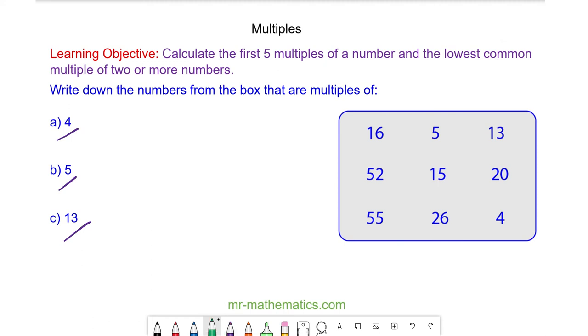Okay for question A. If 52 is divisible by 4, it is a multiple of 4. 4s into 5 go once with 1 left over, and 4s into 12 go 3. So 52 is the 13th multiple. So 52 is also a multiple of 4.